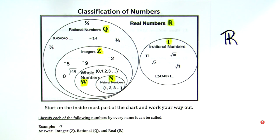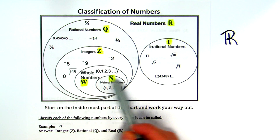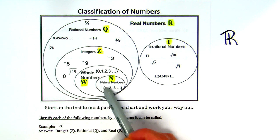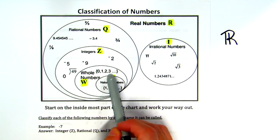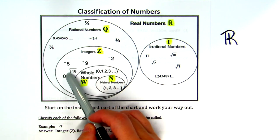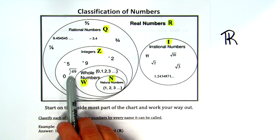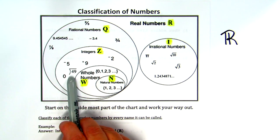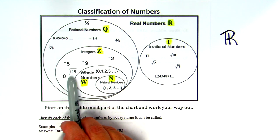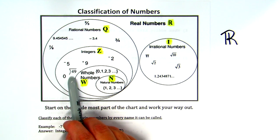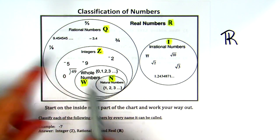Let's say we have square root of five. I always start on the inside — are there square roots in the first group? No. The next one? No. The next? Yes, but you have to be careful. Square root of 49 is 7 — that's a perfect square. But square root of five — can you do that in your head? It's going to be a decimal, two point something, that goes on forever and ever. It's not a perfect square root.